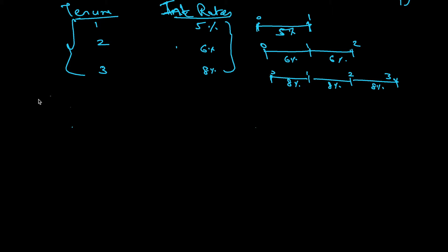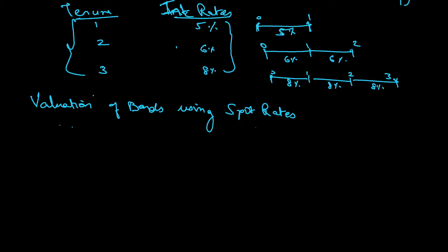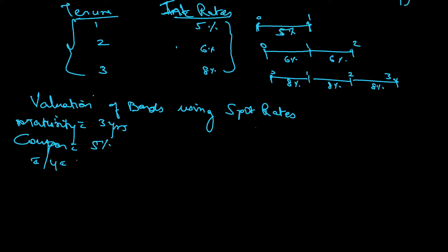With these spot rates, how do I value a bond? We'll do valuation of bonds using spot rates. The given conditions are: maturity is three years, coupon is 5%, and we don't need IY because we have all the spot rates — we'll use those to calculate present value. The spot rates are given, and the future value of the bond is 1000.